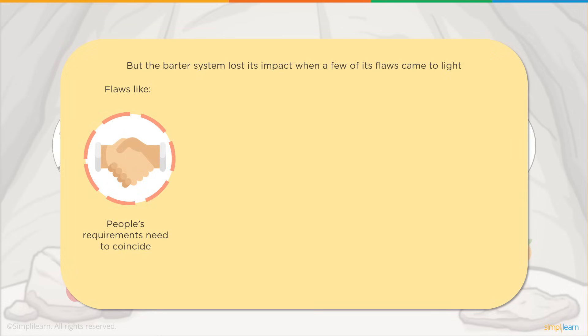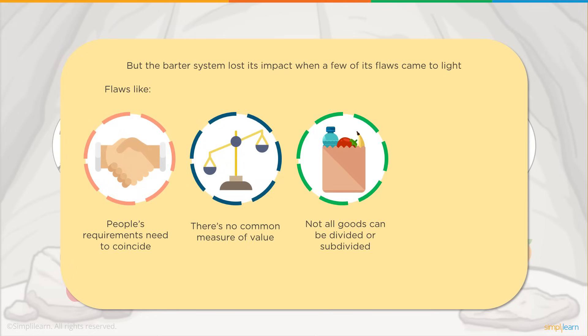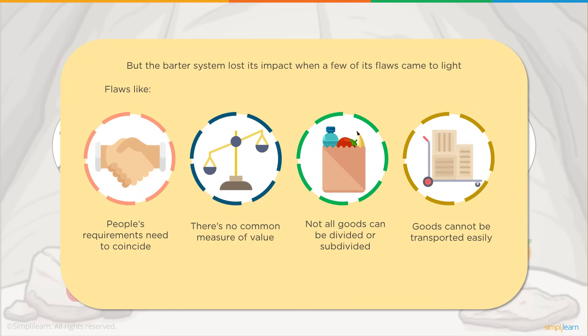These flaws include having people's requirements coincide. For example, if you have five apples and your friend has five oranges, unless your friend also wants your apples, he won't be ready to make an exchange. There's no common measure of value, making it hard to decide how many apples to trade for one orange or mango. Not all goods can be divided — for example, you can't divide a live animal into smaller units. And goods cannot be transported easily, unlike modern currency that fits in your wallet or mobile phone.